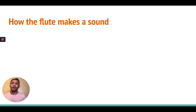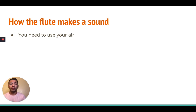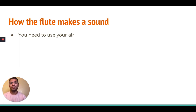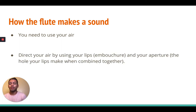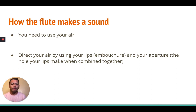So how does the flute make a sound? A few things you've got to know. You need to use your air. We really make sure that we're using air here at Paredes Middle School — we have a few rules about air, but we'll get into that later once you're part of our band program officially. The next thing is you need to direct your air by using your lips, which we call embouchure. It's a French word, and you want to make sure you're shaping your lips appropriately for the air to come out.